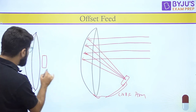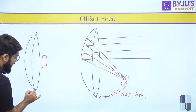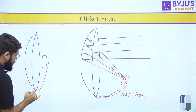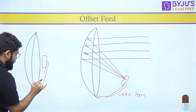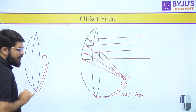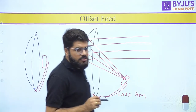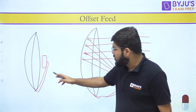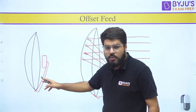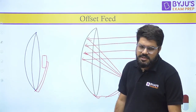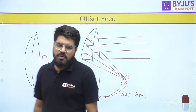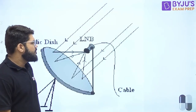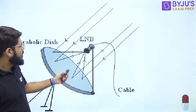Even if the feed were at the center, the LNBF arm would also come to the center and that arm itself would block a portion of the radiation. That is why we normally provide the offset feed.